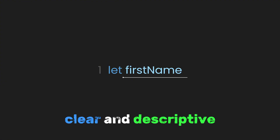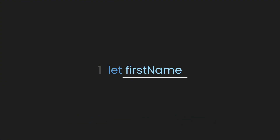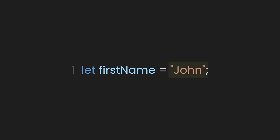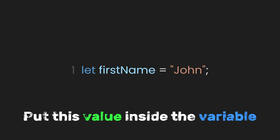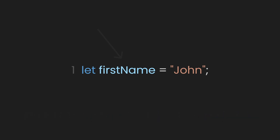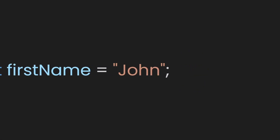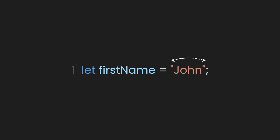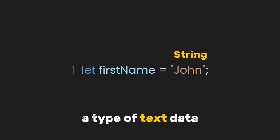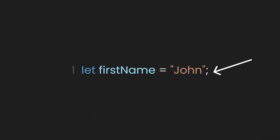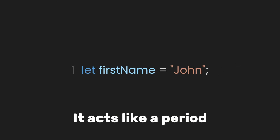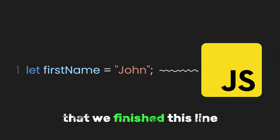The name `firstName` is clear and descriptive, telling us it holds someone's first name. Then we assign a value to the variable using the equal sign — in this case, we're saying the first name is John. The equal sign tells JavaScript to put this value inside the variable. We wrap the text John in double quotation marks and end the line with a semicolon. The quotation marks indicate that John is a string, a type of text data. The semicolon shows the end of the instruction, acting like a period signaling to JavaScript that we've finished this line.